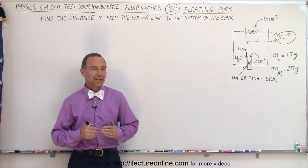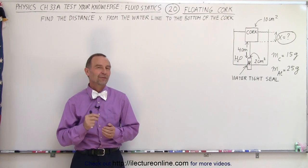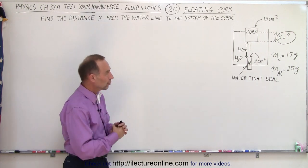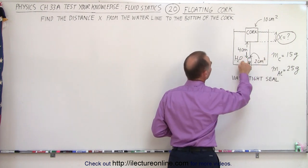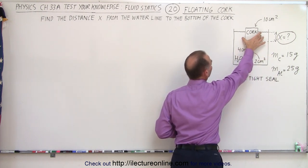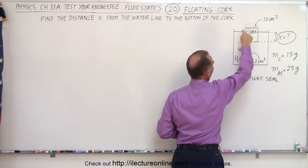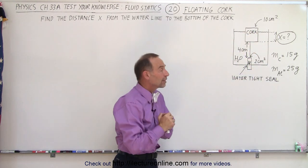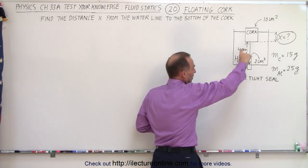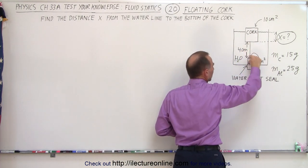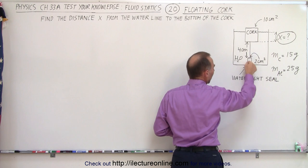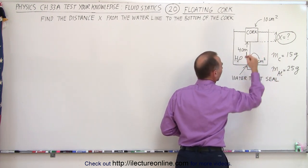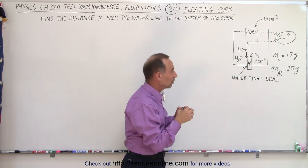Welcome to ElectronLine. In this particular example we have a very interesting concept regarding the buoyancy force. Notice that we have a container that has water in it. There's a cork floating at the top. The cross-sectional area of the cork at the top is 10 square centimeters, and the mass of the cork is 15 grams. We have a string attached to the cork which is 4 centimeters long, and at the bottom of the string we have an aluminum cylinder which has a mass of 25 grams and a cross-sectional area of 2 centimeters squared.